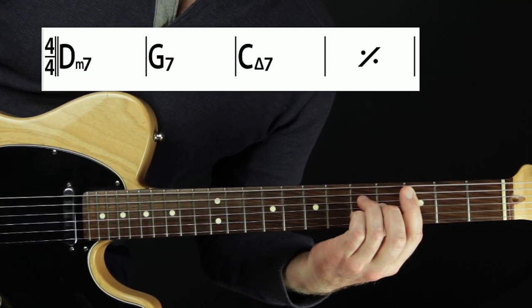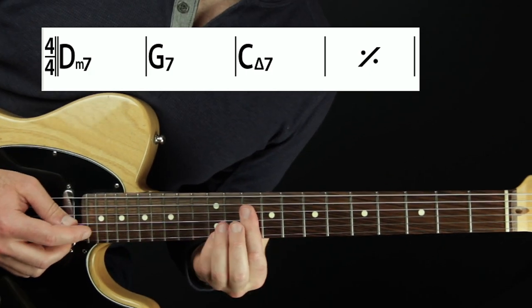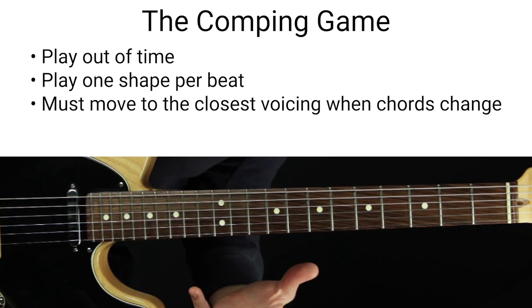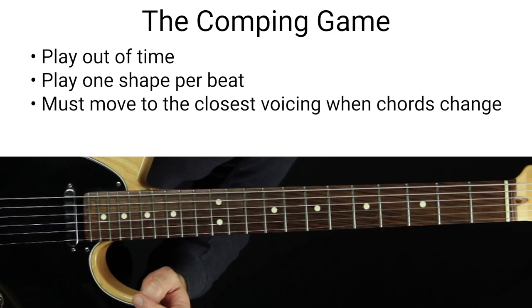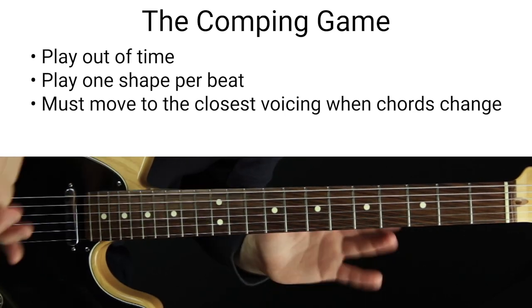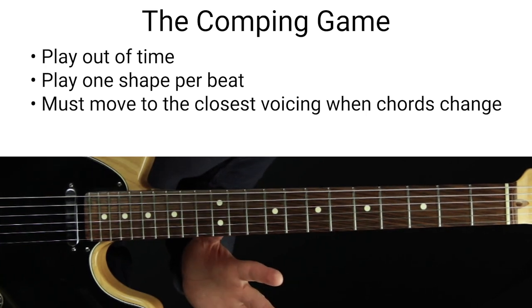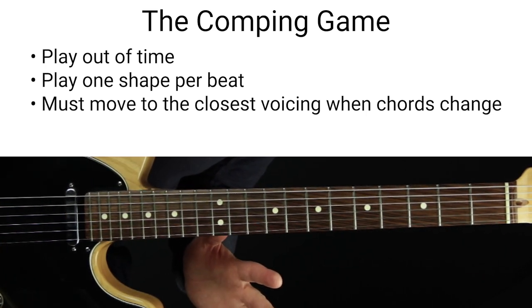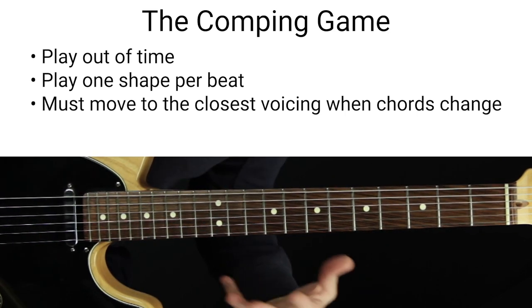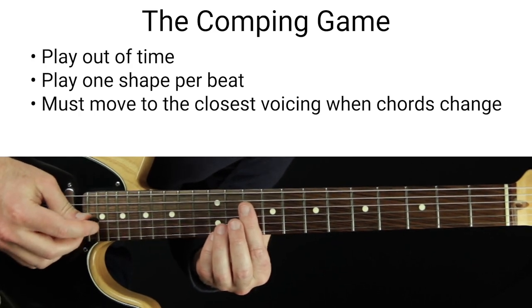Now we're doing a 2-5-1 progression — D minor seven, G7, C major seven — and we want to start piecing together our playing as the progression moves along. The first thing to do is something I often refer to as the comping game. I teach this in my Jazz Comping Mastery course, and it's the same premise here but we're going to be using melody on top. We play out of time, one chord shape per beat, and on each chord you can jump to whatever shape you want.